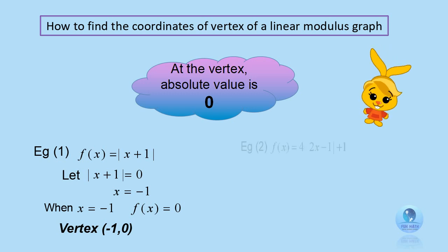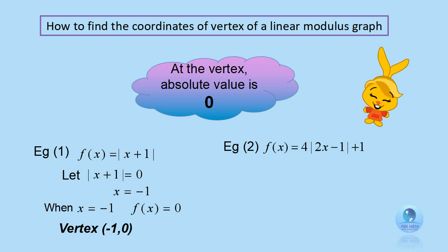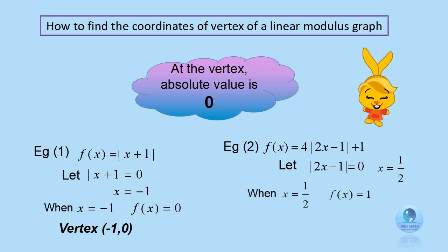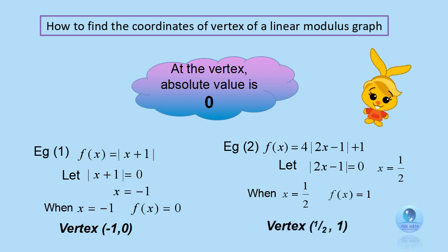Let's look at the second example. Given f of x equals to 4 multiplied by modulus 2x minus 1, plus 1. To find the vertex, let the modulus part equal to 0. In this case, let modulus 2x minus 1 equal to 0, and you get x equals to 1 over 2. When you substitute x equals to 1 over 2, you get f of x equals to 1. So your vertex is at 1 over 2, 1.